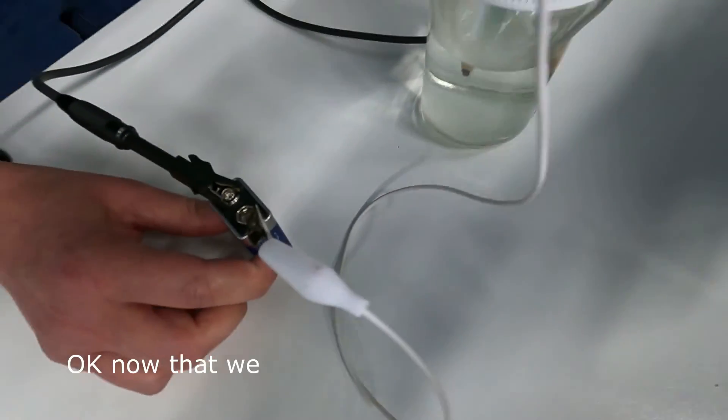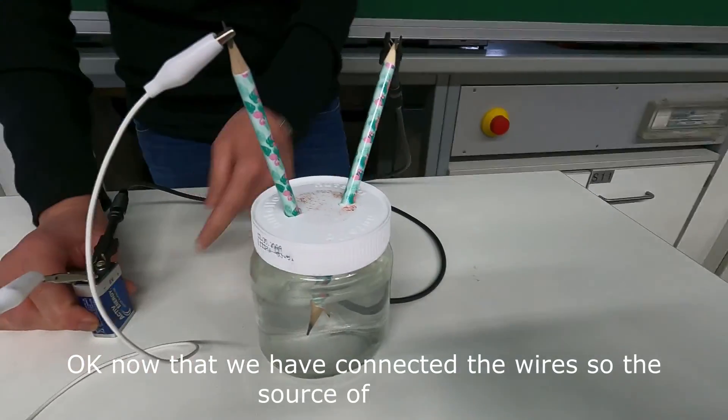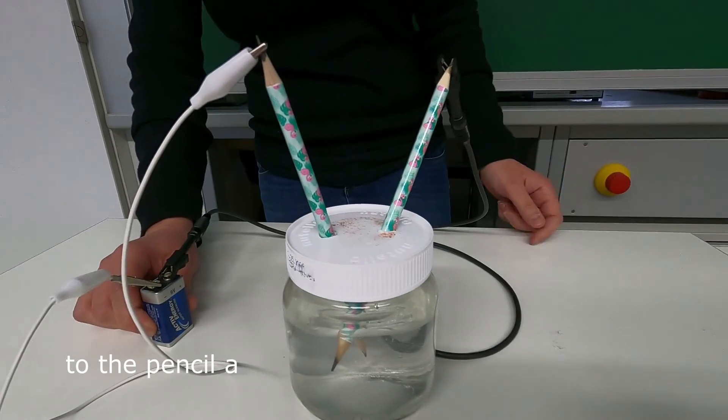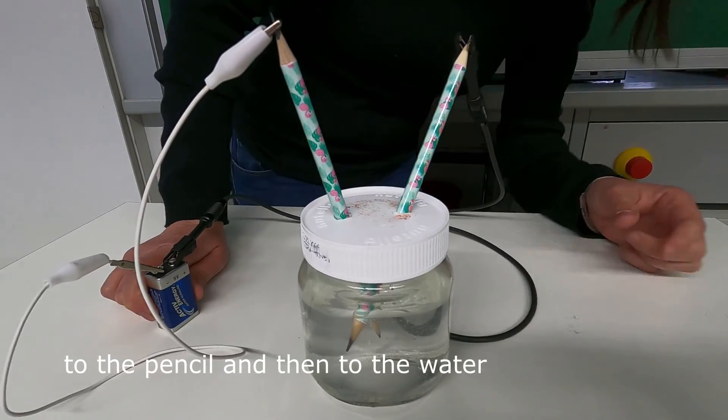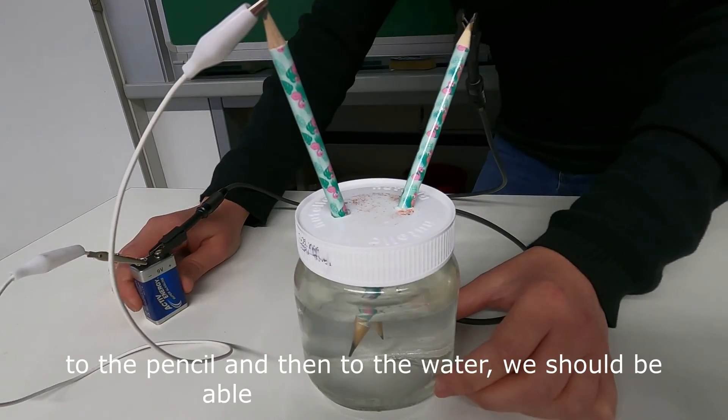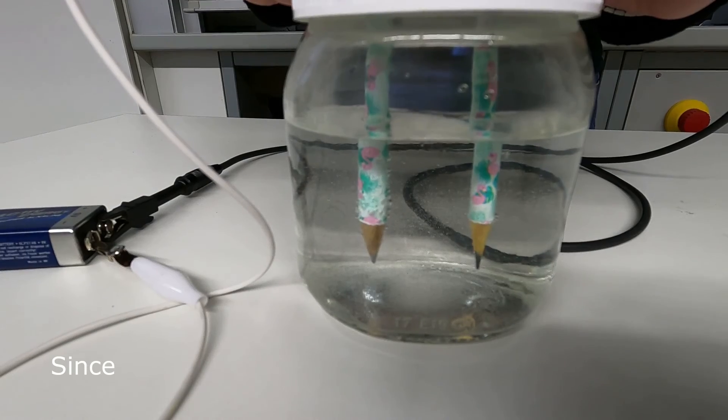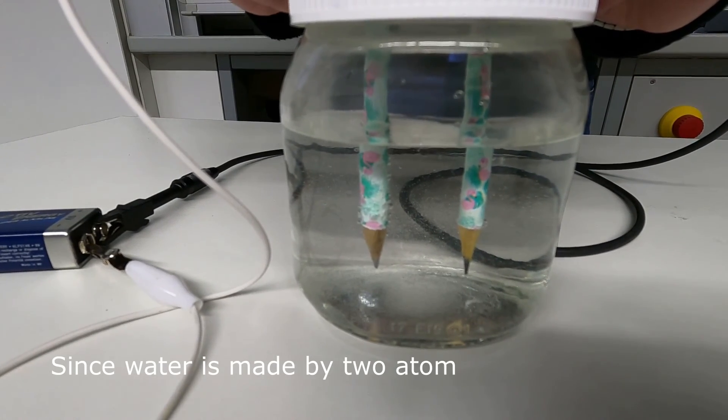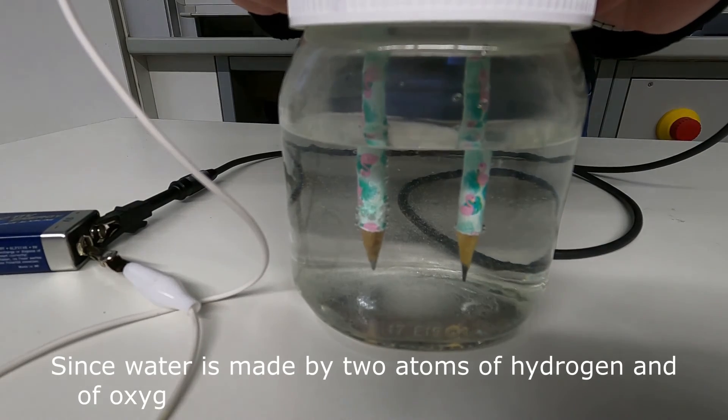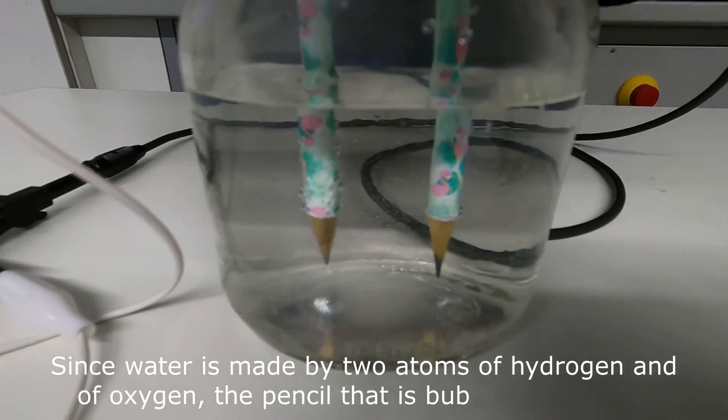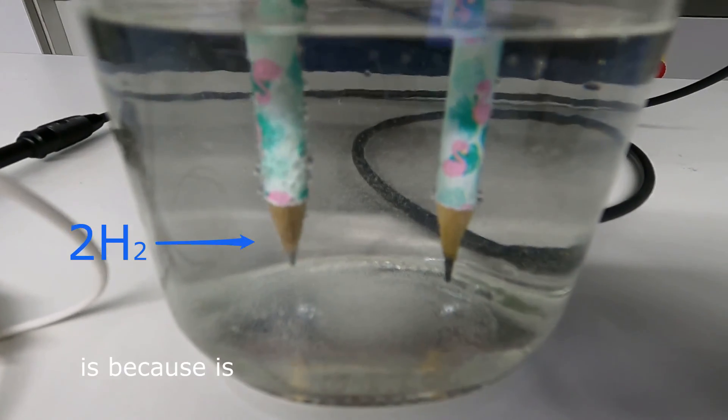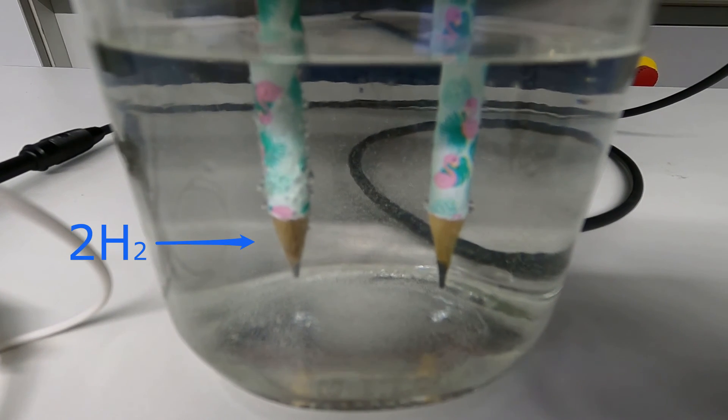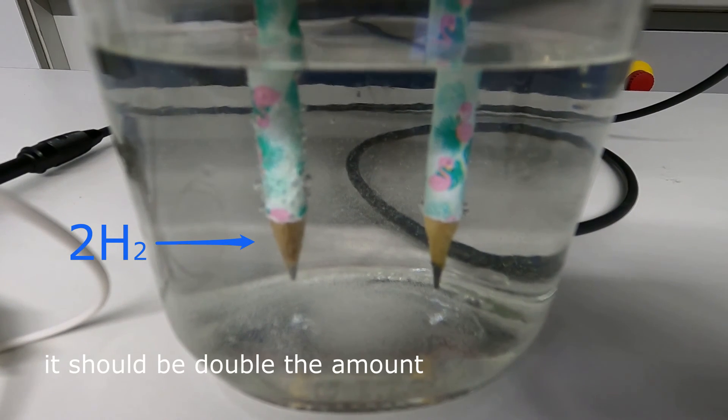Now that we have connected the wire, so the source of energy to the pencil and then through the water, we should be able to see the electrolysis. This water is made by two atoms of hydrogen and one of oxygen. The pencil that is bubbling more gas is because it's bubbling hydrogen and in theory it should be double the amount of the one producing oxygen.